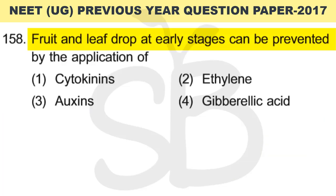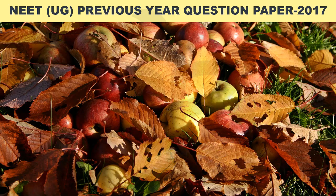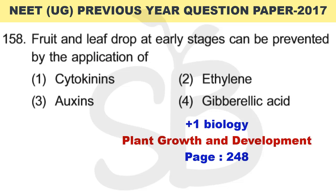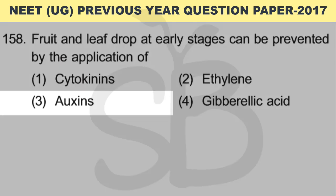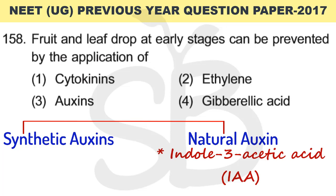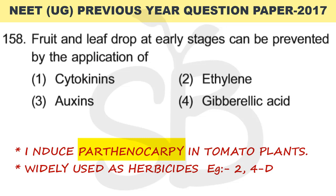Question number 158: Fruit and leaf drop at early stages can be prevented by the application of? From Plus 1 biology, chapter: Plant Growth and Development, page number 248. The correct answer is option 3: auxin. Auxin is a synthetic and natural plant hormone that prevents early abscission of leaves and fruits.